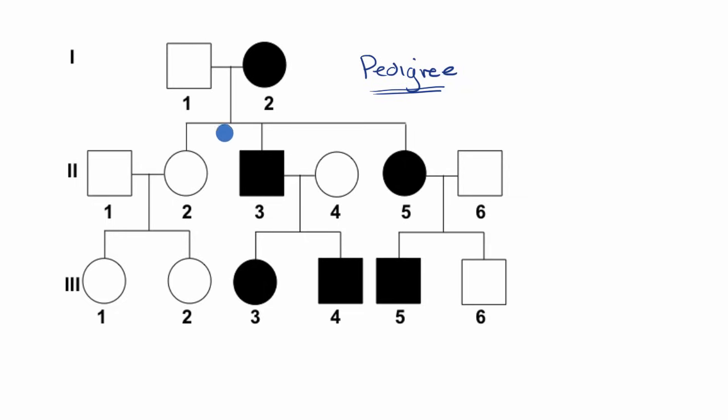But let's just break it down so that we understand all of the different parts of a pedigree. So big picture, a circle represents a female in the family, and a square represents a male in the family.